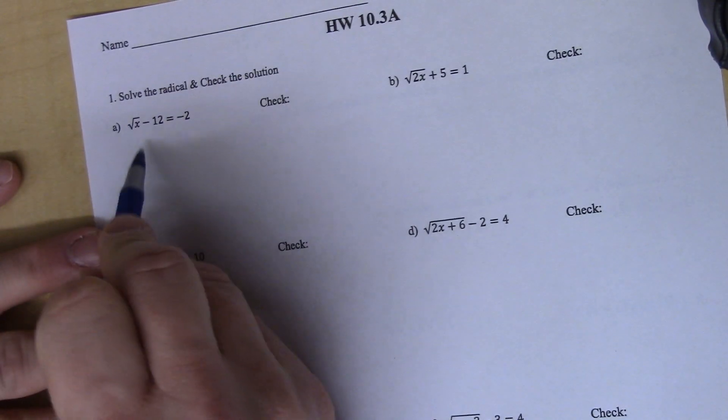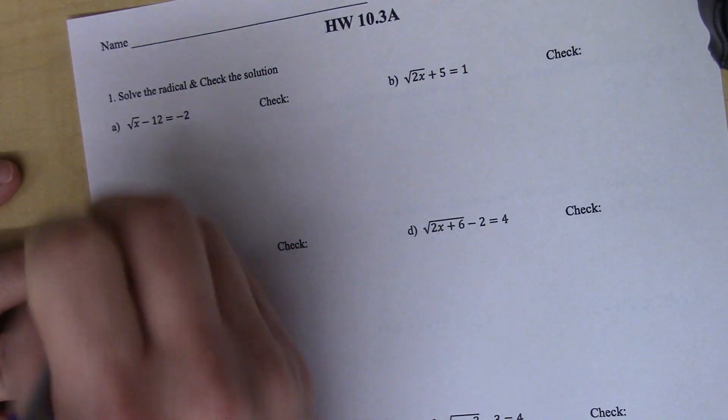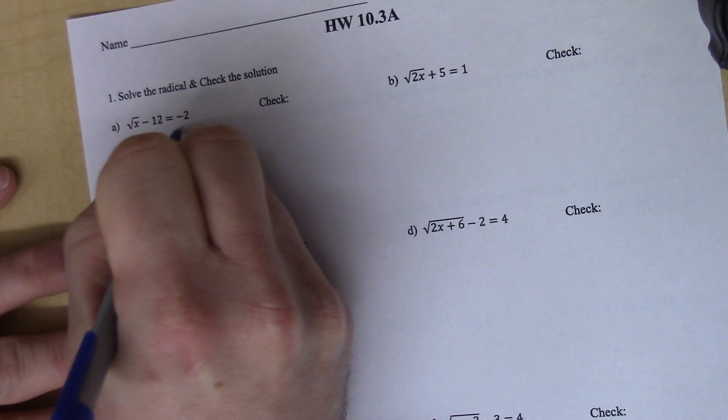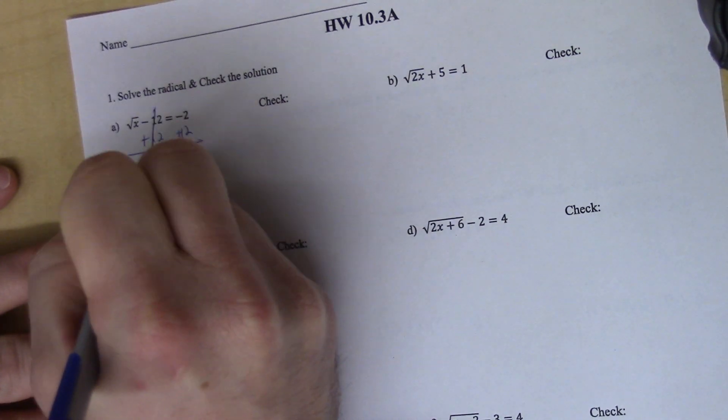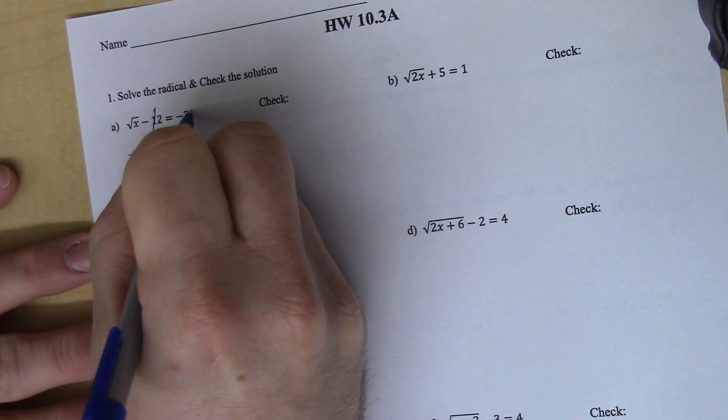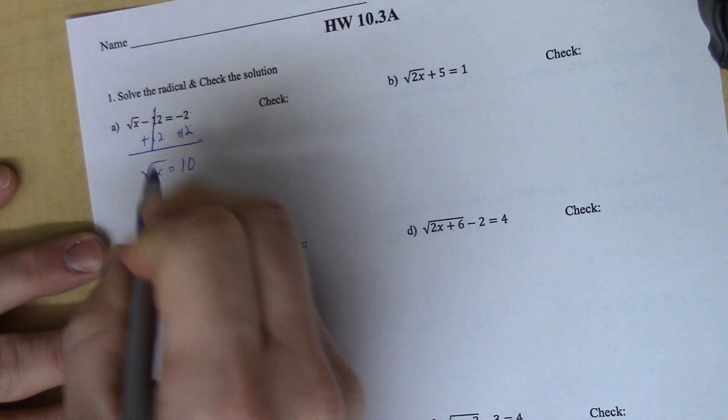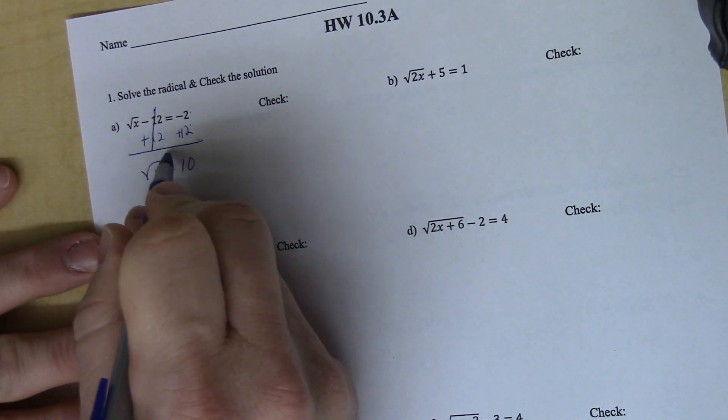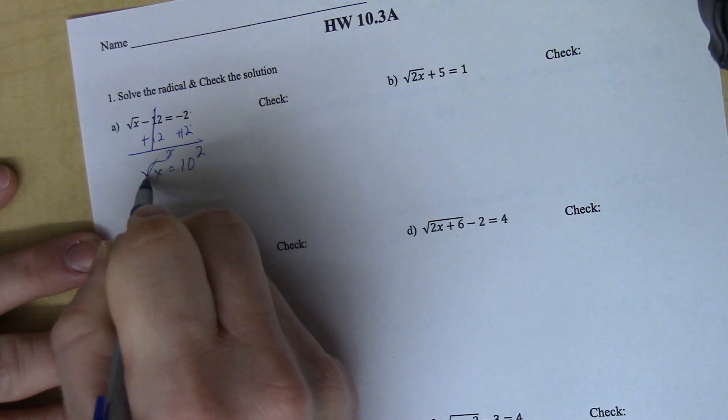Okay, so on this first problem, again, we got to get rid of what's being added or subtracted first. So I add plus 12 to both sides. Those will cancel. Square root of x equals negative 2 plus 12 is 10. And then the opposite of the square root is to square it. And those will cancel. You get x equals 10 squared, which is 100.